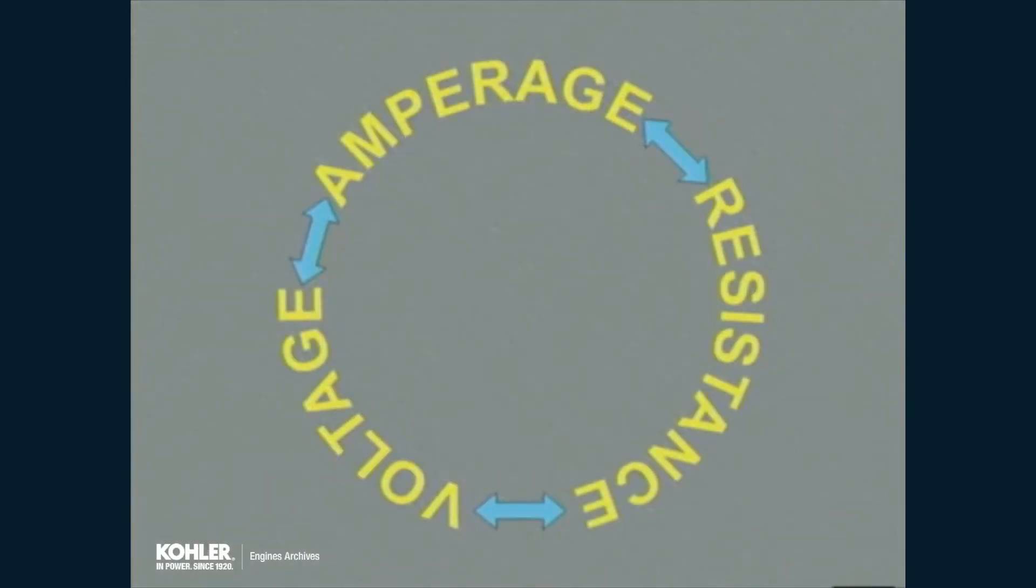These three factors - voltage, amperage, and resistance - are present in any circuit with current flow, and they have a definite and exact relationship to each other.